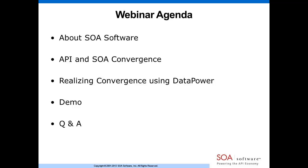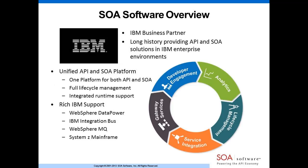SOA Software is an enterprise software company based out of Los Angeles. We are an IBM business partner and do a lot of great work with IBM and the IBM customer base. We have a very long history of providing API and SOA solutions within IBM enterprise environments. We work with sophisticated IBM scenarios — products like WebSphere DataPower, IBM Integration Bus, WebSphere MQ, and a lot of integration work with System z mainframes. We offer a unified API and SOA platform.